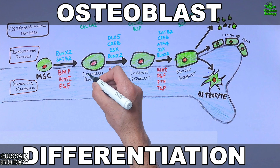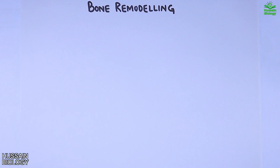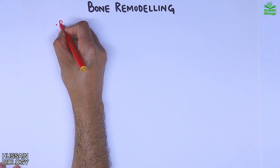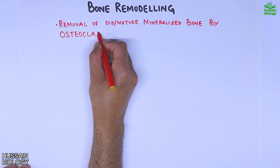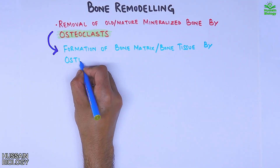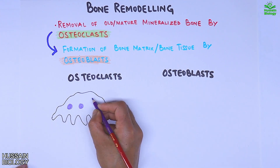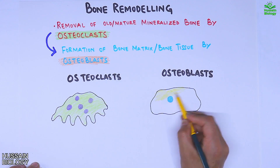In the previous video we discussed osteoblasts and their differentiation — the link is in the description. In this video we'll be discussing the bone remodeling process. In simple terms, it is the removal of old or immature mineralized bone by osteoclasts and then formation of bone matrix by osteoblasts. Two important cells are involved: the osteoclast and the osteoblast, as shown in the diagram.